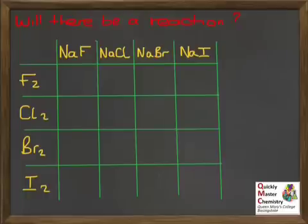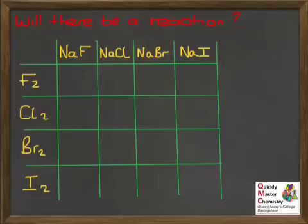Have a look at this table. It shows a whole range of possible reactions — different halogens down the left reacting with different halide compounds across the top. These are sodium halide compounds; the metal is just a spectator ion. It's the halide ion that would potentially be oxidised by the halogen. Pause the video and decide, for each of these sodium halide compounds, whether the halide ion can be oxidised by the halogen it's reacting with.